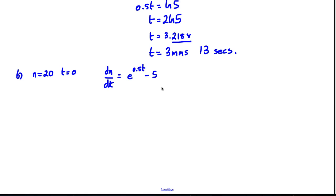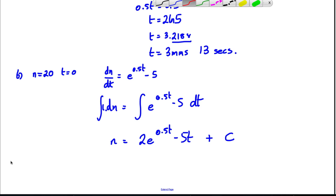Okay, so we're going to have a go at solving this. We're going to integrate and separate variables, so the integral of dn is going to be the integral of e to the 0.5t minus 5 dt. Integrating 1 dn is simply going to be n, so n is going to be equal to, if you integrate this, you're going to get 2e to the 0.5t minus 5t plus some constant.